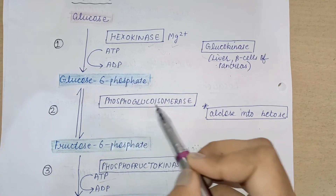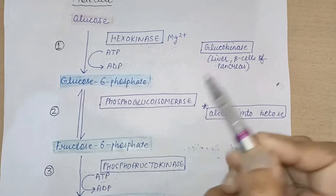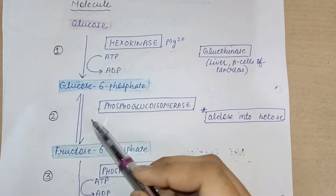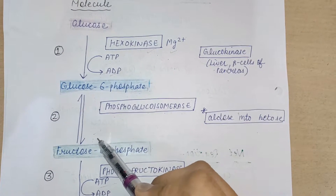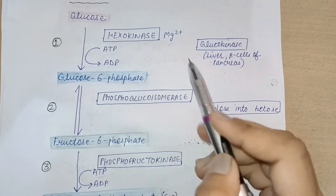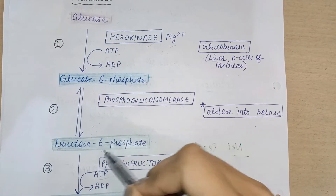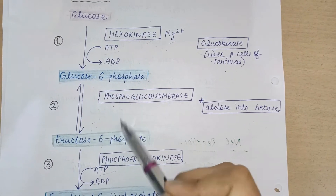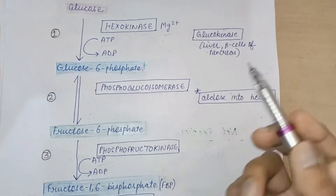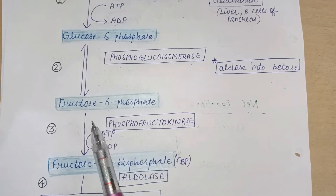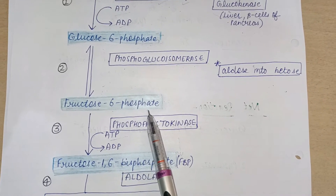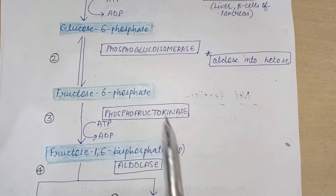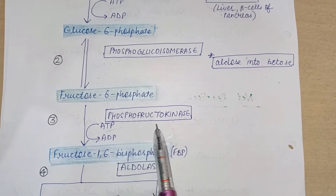The second step is isomerization — the isomer of glucose-6-phosphate will form with the help of the enzyme phosphoglucoisomerase, and this second step of glycolysis is reversible. Glucose-6-phosphate is an aldose molecule and fructose-6-phosphate is a ketose molecule. So here, isomerization takes place.